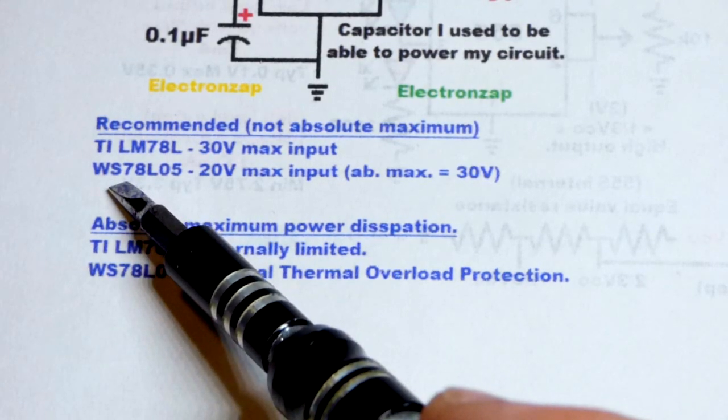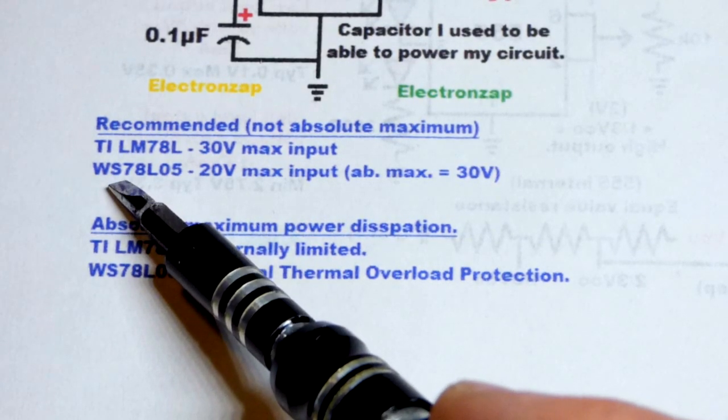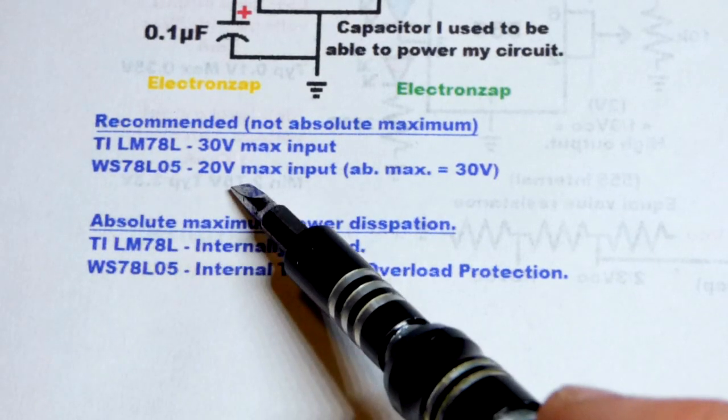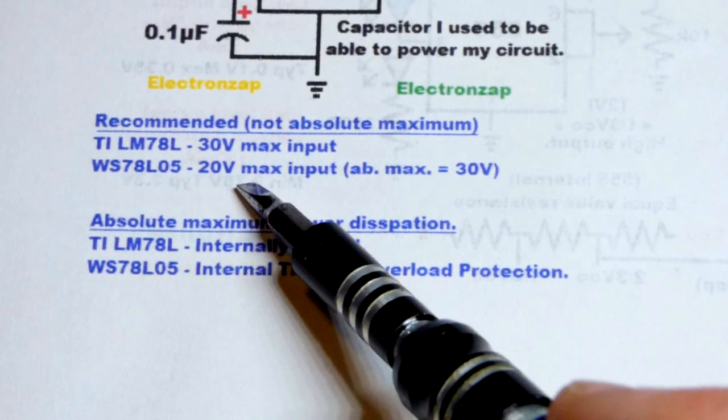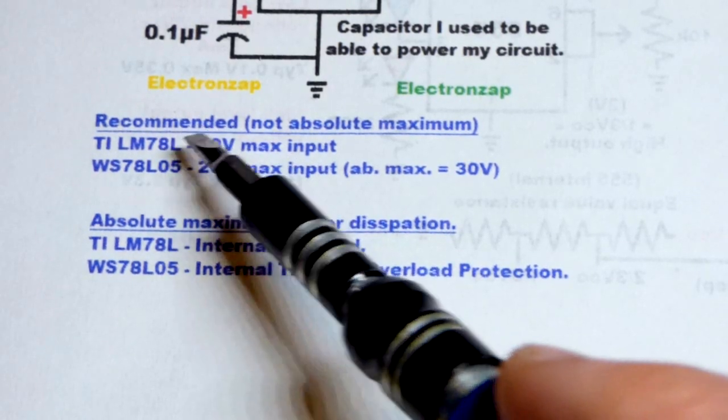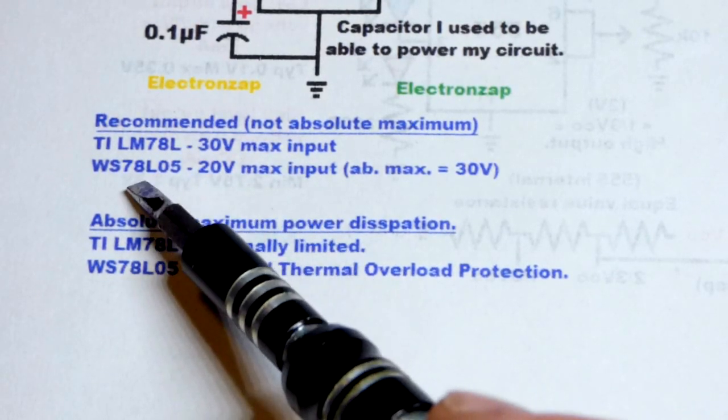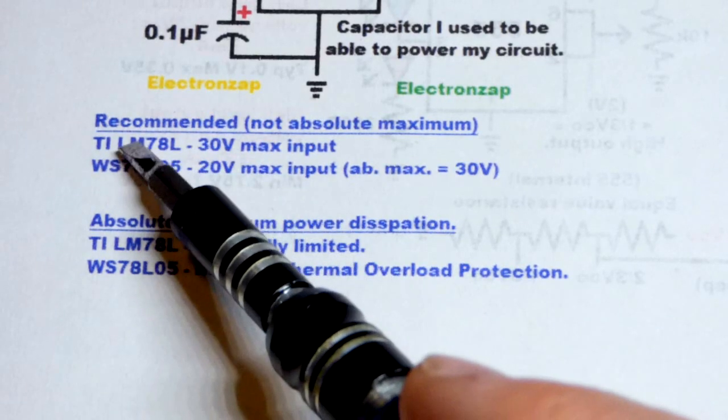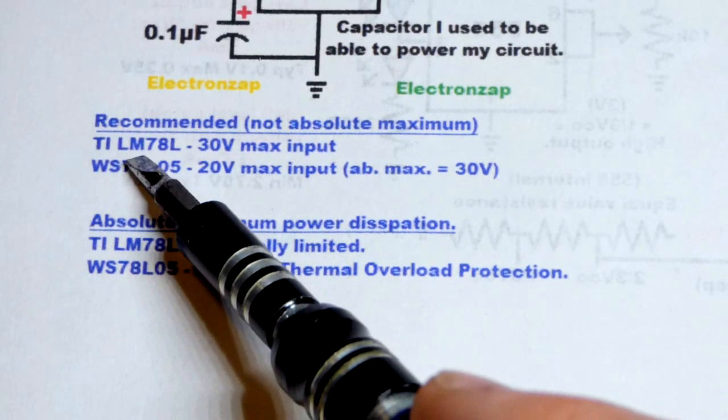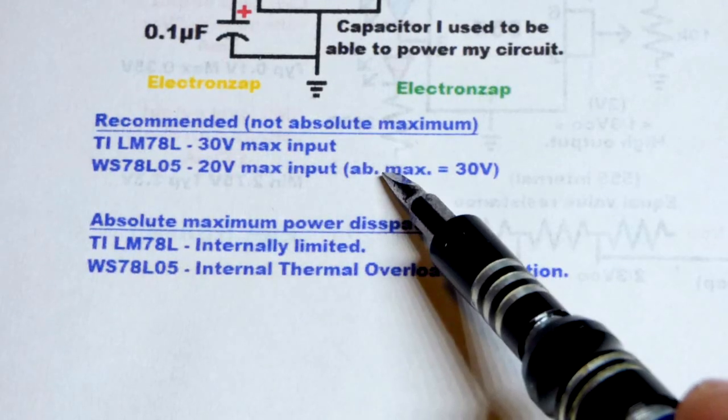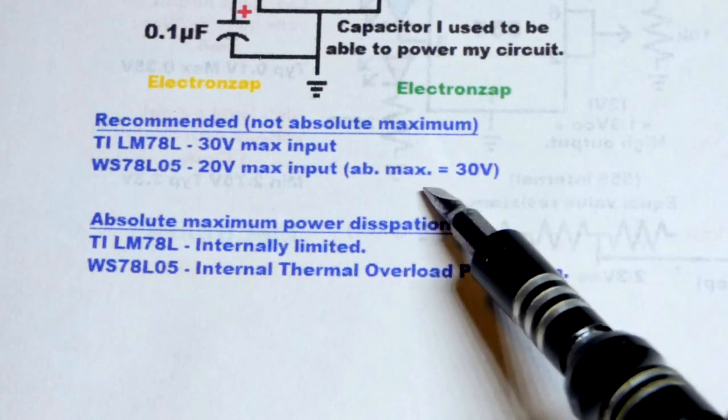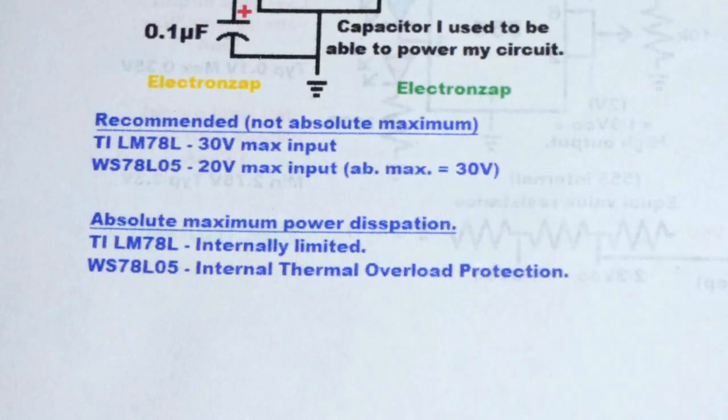And so I don't know if the WS version has really any differences, but one difference with the data sheet is that for the maximum recommended input, the WS version says 20 volts, whereas the Texas Instrument LM version says 30 volts. But they both have an absolute maximum of 30 volts.